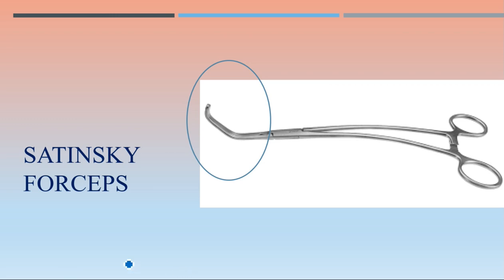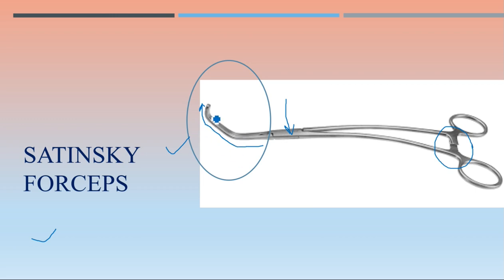The next instrument is Satinsky forceps. Focus on the distal end — you can see the presence of lock, the joint, and the characteristic curvature: one turn, then another curvature, and then another. These double-curved forceps are known as Satinsky forceps, used for vascular surgery and can also be used as a vascular clamp.